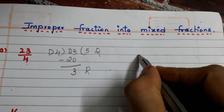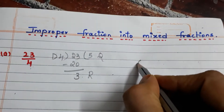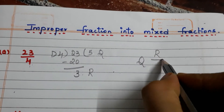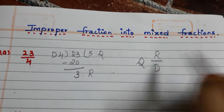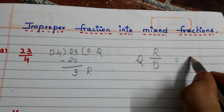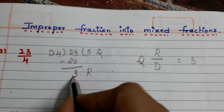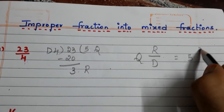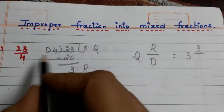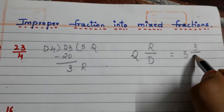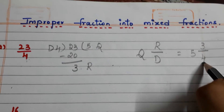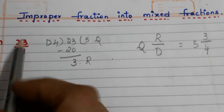I am giving you a simple shortcut: Q R/D. So what is the quotient here? 5. What is the remainder? 3. What is the divisor? 4. So 5 and 3/4 is the mixed fraction for the improper fraction 23 by 4.